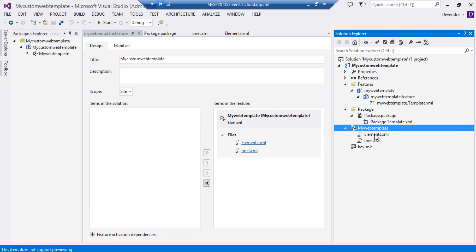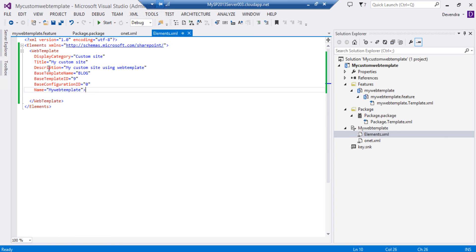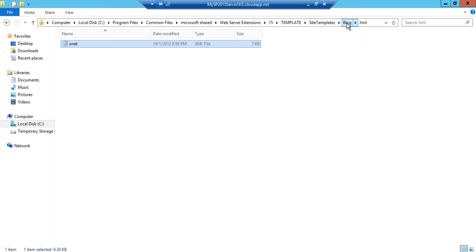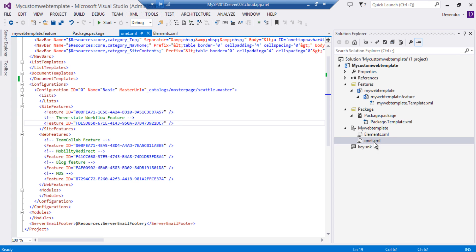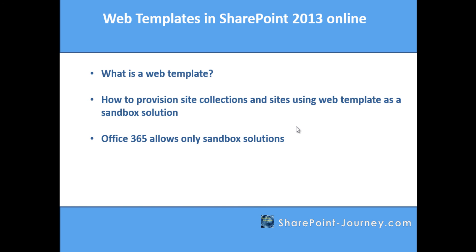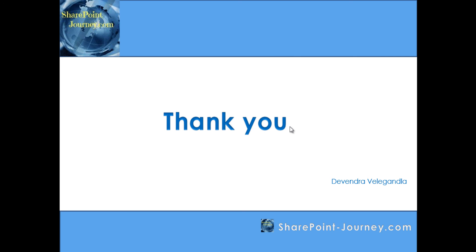To summarize what we've done: we added an empty element with the web template configuration — DisplayCategory, Title, Description — and the Name must match the element. We took the onet.xml from the 15 hive under the Blog XML folder, incorporated it, and published it as a sandbox solution. In this video you've seen how to provision a site collection and sites using a web template for a blog site. You can do the same for team sites, publishing sites, and others. In future videos we'll add a custom landing page, custom master page, and provision list libraries. Thank you for watching — for more videos please visit sharepointjourney.com.